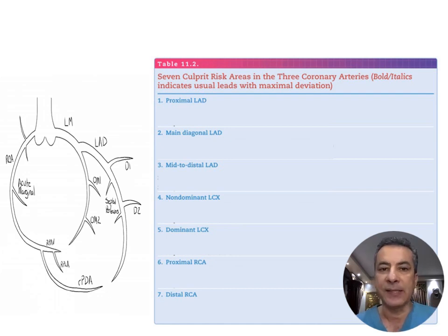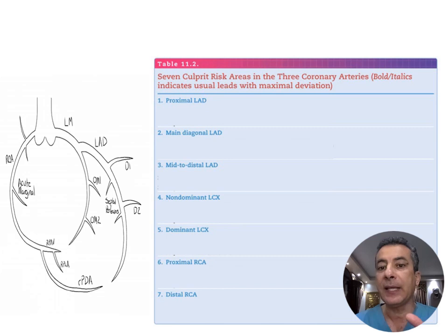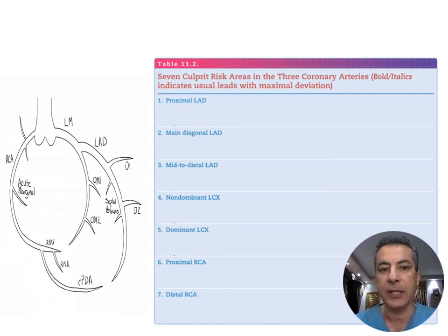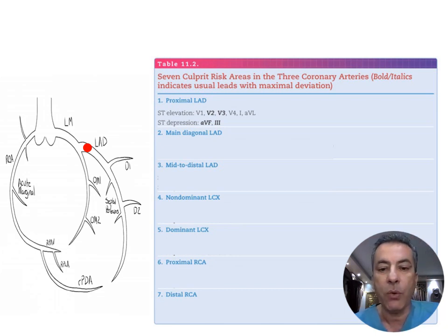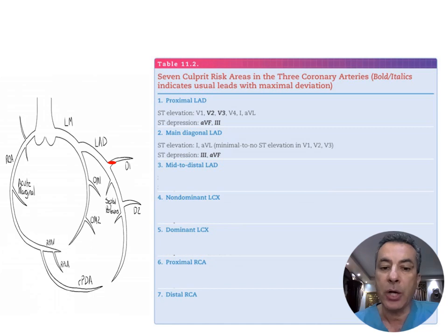Changes in T wave axis and ST segment deviations are definite markers for ischemic heart disease, among other things. The most important feature of ischemic causes is the regional distribution of changes, which follow the coronary artery distribution. We will now correlate the culprit coronary artery lesion with the leads reflecting those changes, starting with proximal LAD lesions. A proximal LAD lesion typically produces ST elevation in V2 and V3, possibly extending to V1 or V4, leads I and aVL, with ST depression in aVF and lead III. Main diagonal occlusion usually produces ST depression in leads III and aVF, sometimes with ST elevation in leads I and aVL.